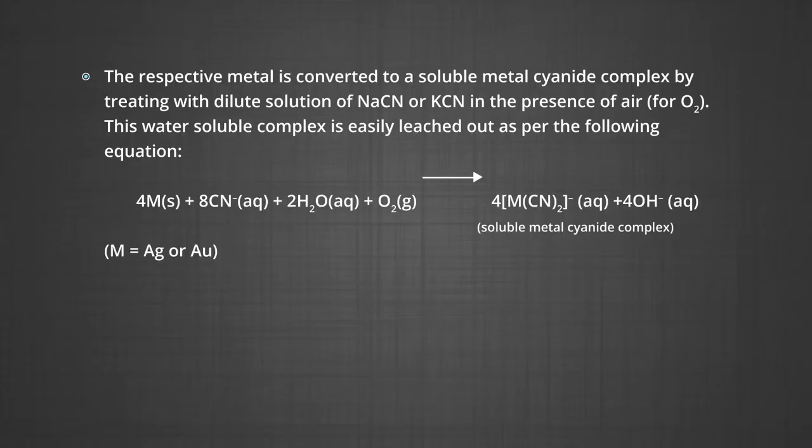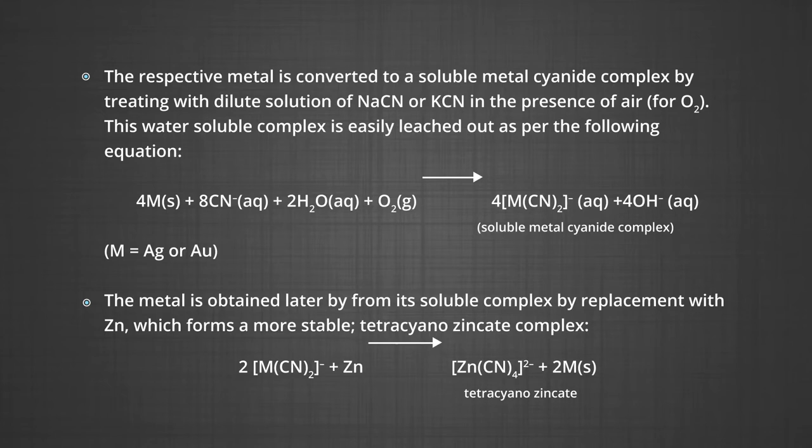Now let us see the metallurgy of silver and gold by the process of leaching. The respective metal is converted to a soluble metal cyanide complex by treating with a dilute solution of sodium cyanide or potassium cyanide in the presence of air (oxygen). This water-soluble complex is easily leached out. In the second step, the metal is obtained from its soluble complex by replacement with zinc, which forms a more stable tetra-cyano-zincate complex.